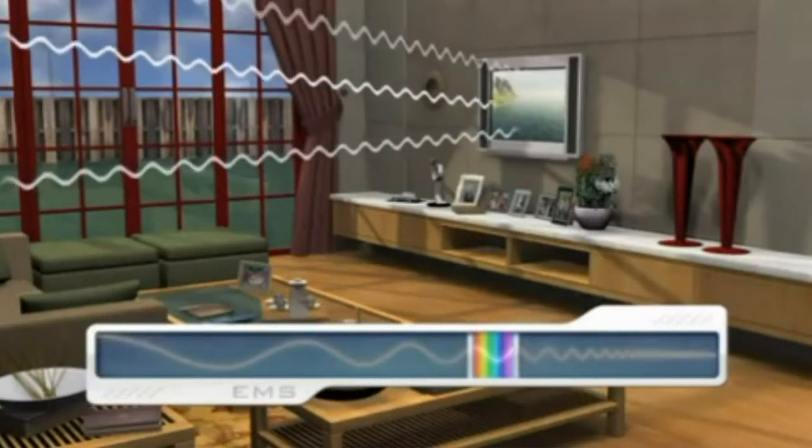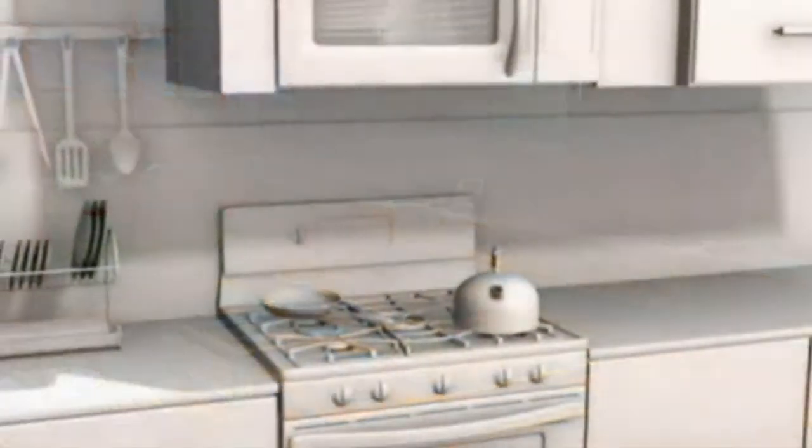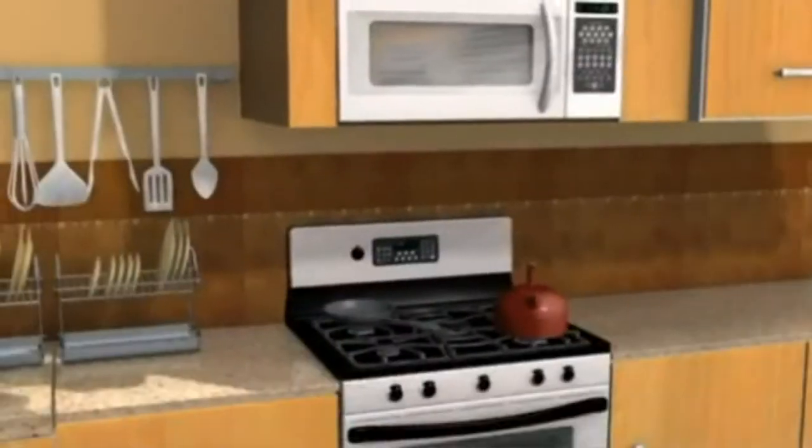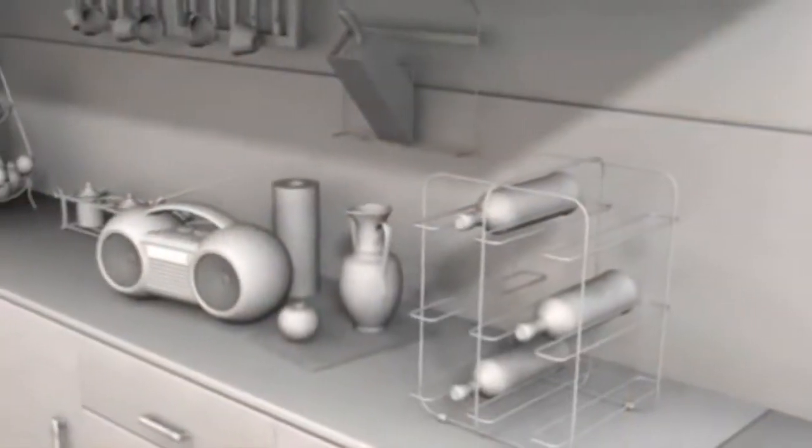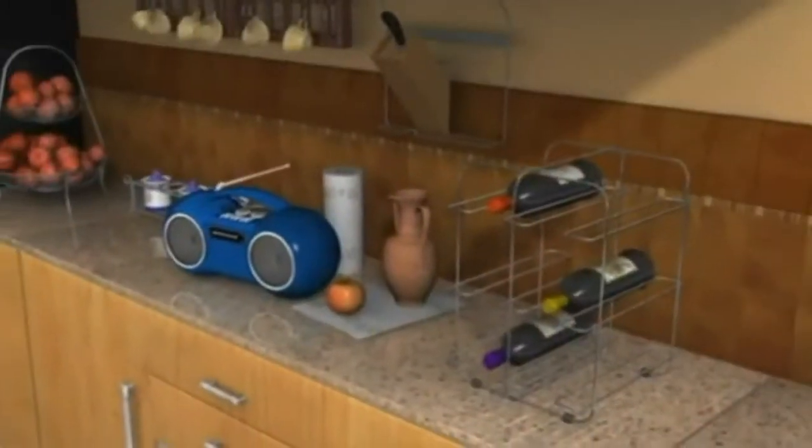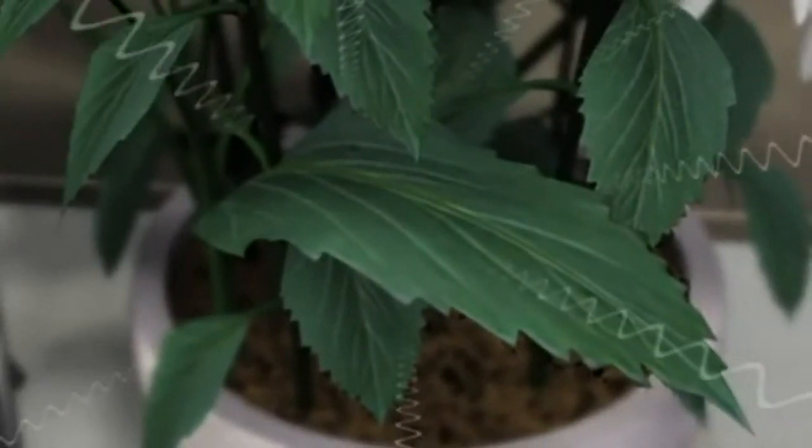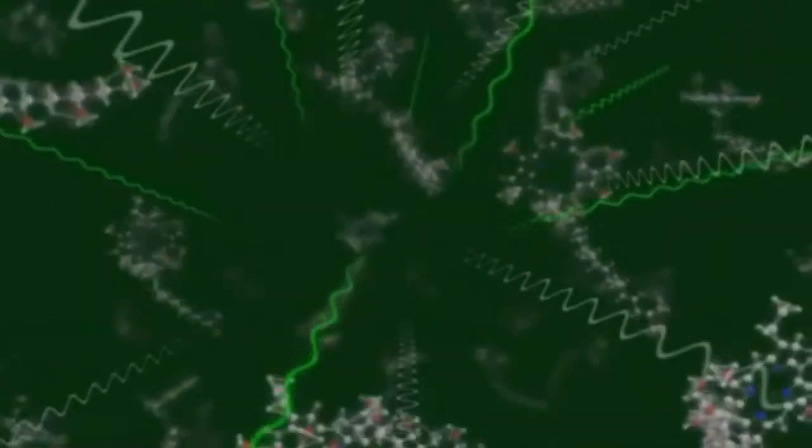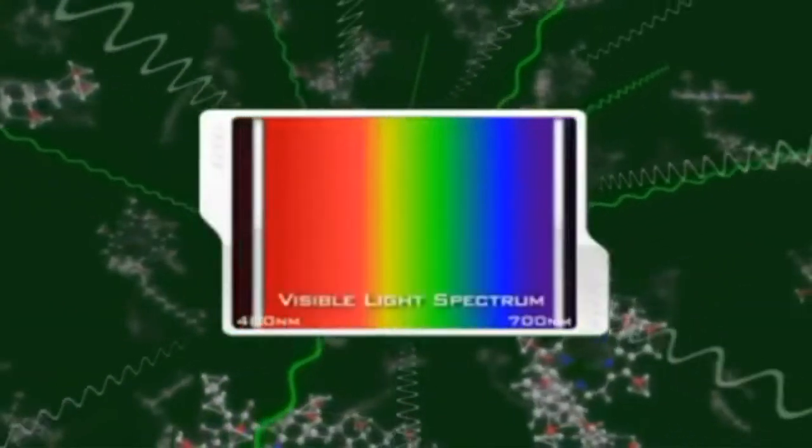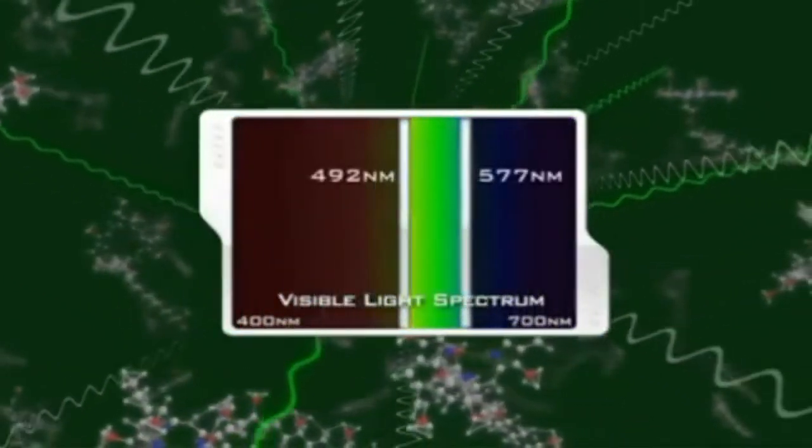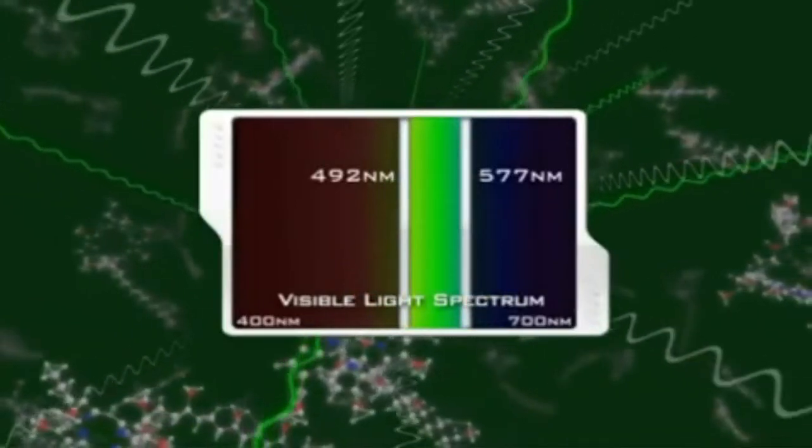Objects appear to have color because EM waves interact with their molecules. Some wavelengths in the visible spectrum are reflected and other wavelengths are absorbed. This leaf looks green because EM waves interact with the chlorophyll molecules. Waves between 492 and 577 nanometers in length are reflected, and our eye interprets this as the leaf being green.